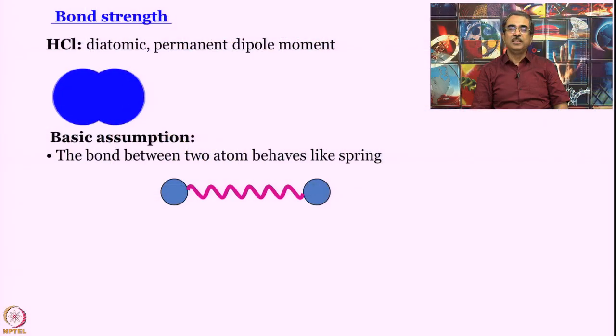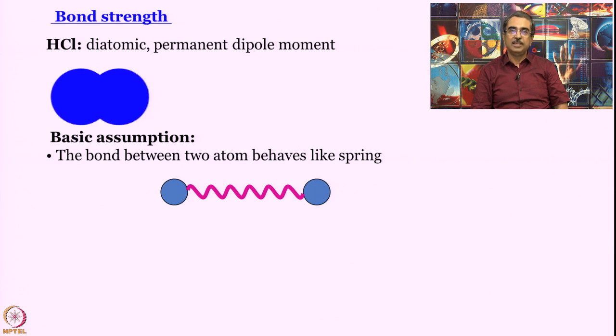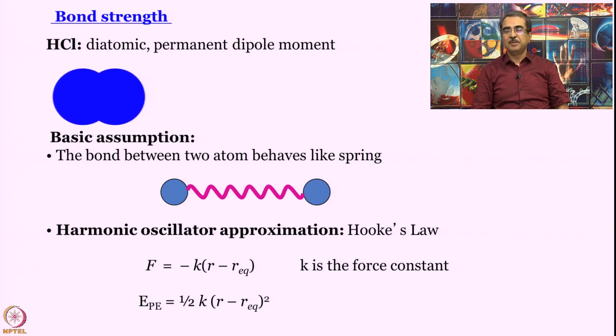So the basic assumption in formulating the quantum mechanical treatment of HCl, to start with at least, is that the bond between two atoms behaves like a spring. And not just any spring, a spring that is well behaved, a spring that follows Hooke's law. Hooke's law is where the restoring force is proportional to the displacement. And potential energy, for the first time we are encountering potential energy after hydrogen atom. For vibrations, potential energy is there.